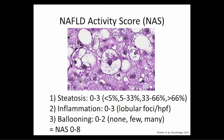The NAFLD activity score is something we use more in research and clinical trials to quantify what's happening on a liver biopsy. It's a grade: steatosis goes from zero to three — less than 5% is zero, greater than 5% to 33% is one, and so on. By definition, all you need is greater than 5% to call it fatty liver.